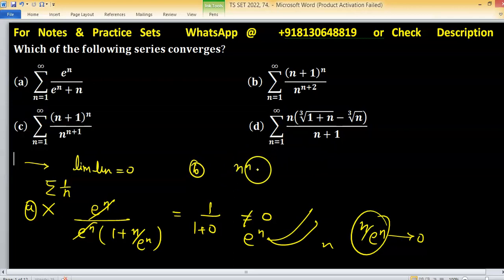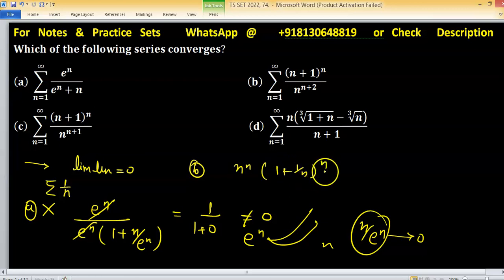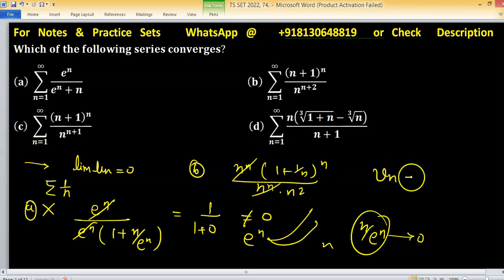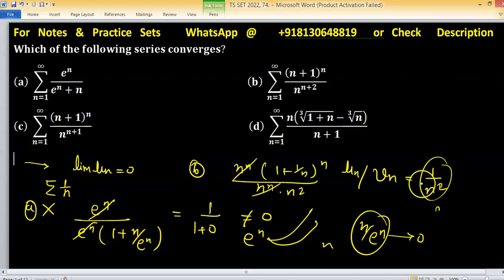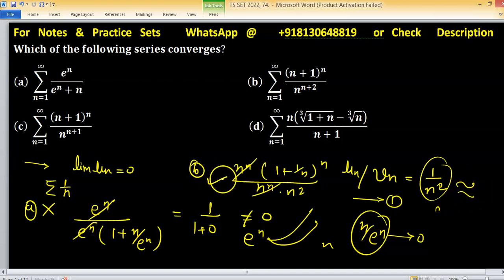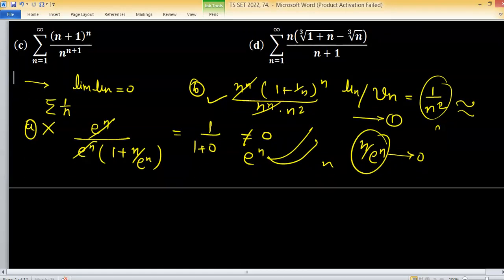For option B, take n common from the numerator: we have (1 + 1/n)^n upon n^n times n². This simplifies, and we can consider v_n as 1/n². By the comparison test, the limit of u_n/v_n equals 1, which is non-zero and finite. Since v_n = 1/n² is convergent by the p-series test (p = 2 > 1), option B is a convergent series.